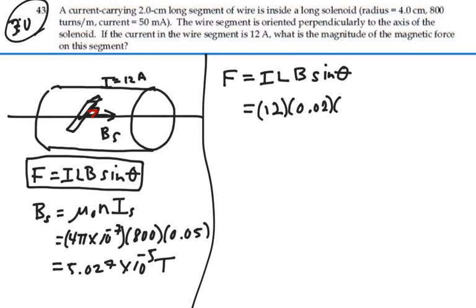magnetic field, 5.027 times 10 to the minus 5, sine of 90 degrees. Sine of 90 degrees is 1. So what does this give us?